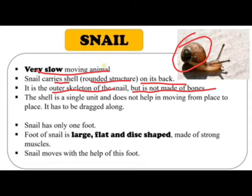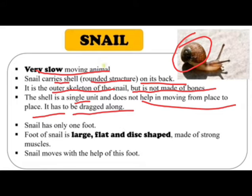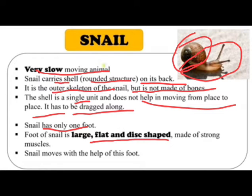The shell is a single unit and does not help in moving from one place to another — it has to be dragged along. The snail has only one foot, which is large, flat and disc-shaped, made of strong muscles.